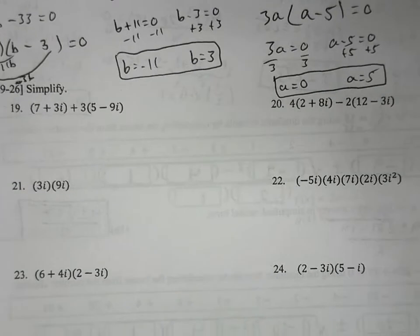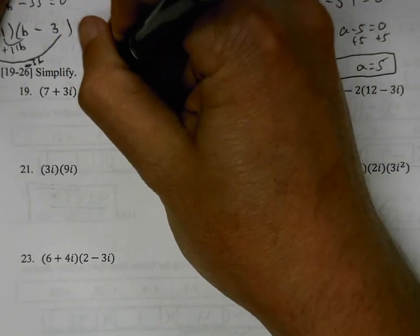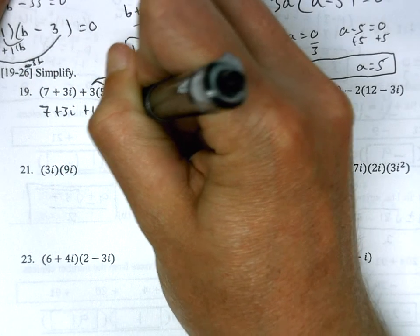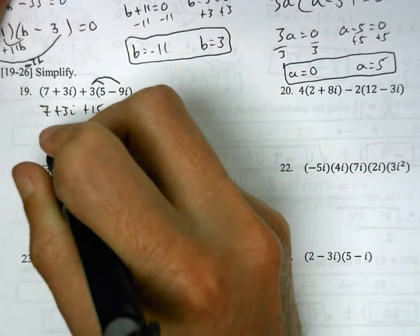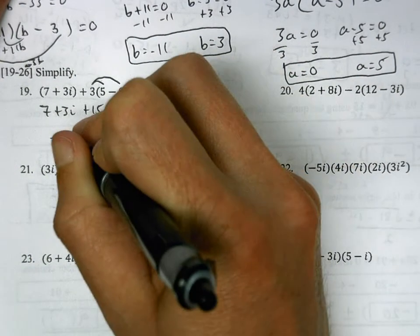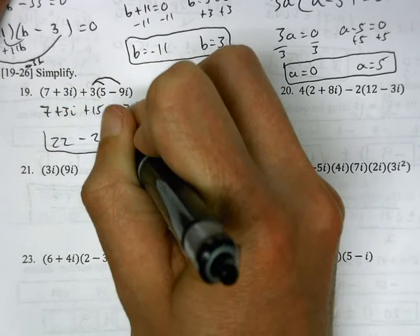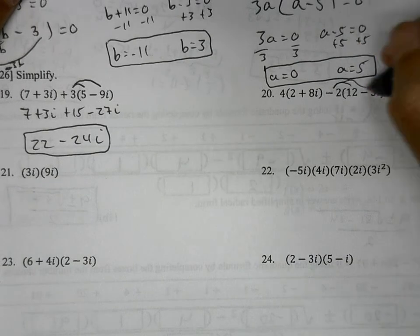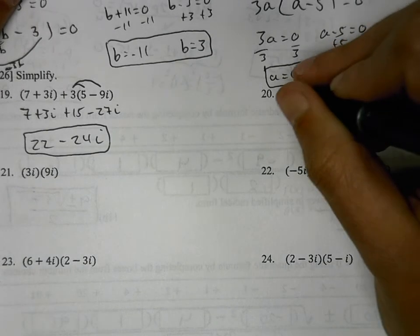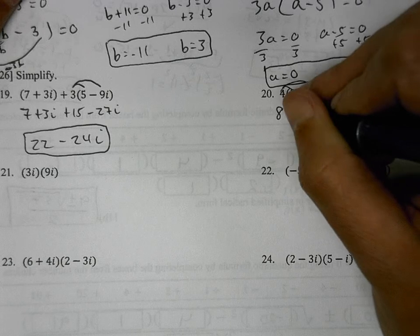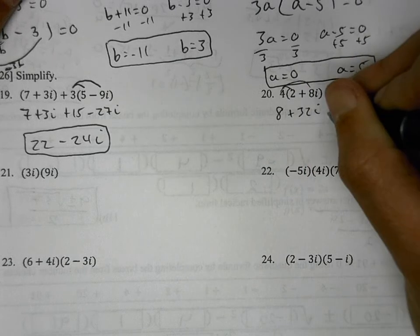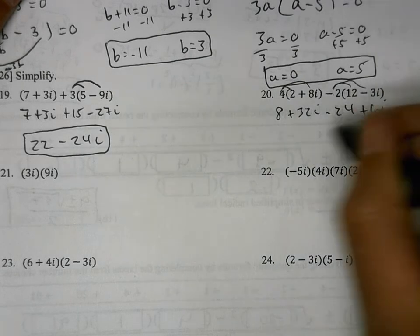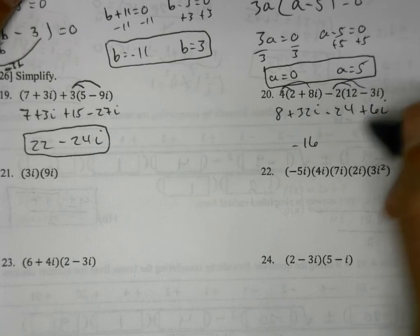Problem 19: simplify by distributing 3 into the inside: 7 plus 3i plus 15 minus 27i. Combining like terms: 7 plus 15 is 22, and 3i minus 27i is negative 24i. The answer is 22 minus 24i. Problem 20: distribute negative 2 and distribute 4. 4 times 2 is 8, 4 times 8i is 32i, negative 2 times 12 is negative 24, negative 2 times negative 3i is positive 6i. Combining: 8 minus 24 is negative 16, and 32 plus 6 is positive 38i.